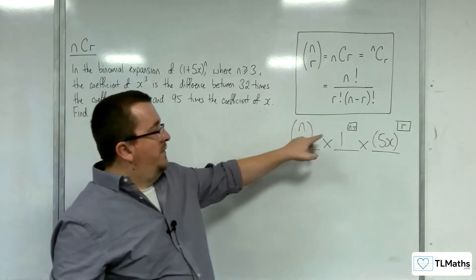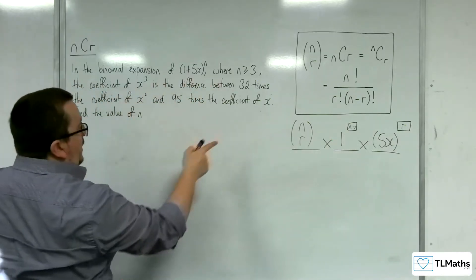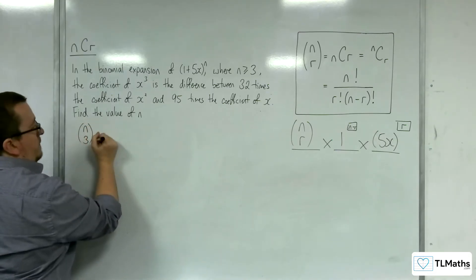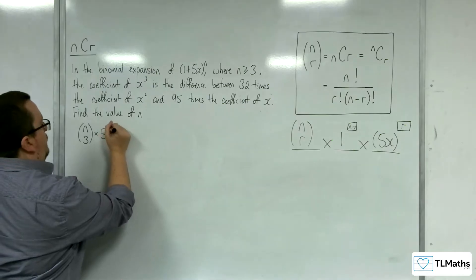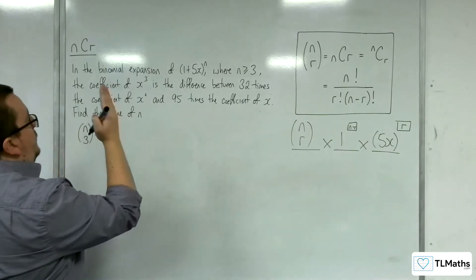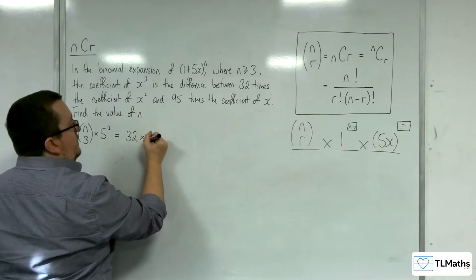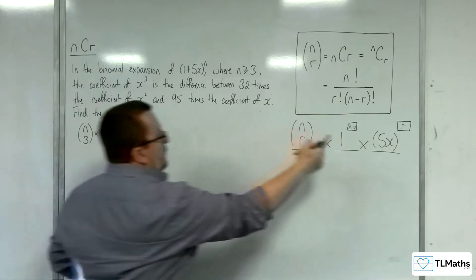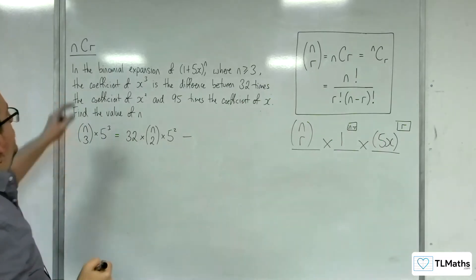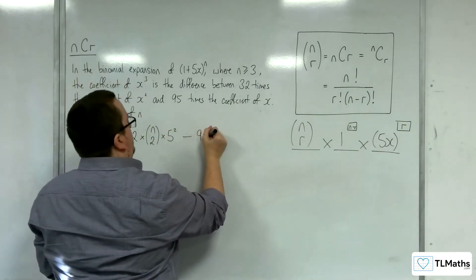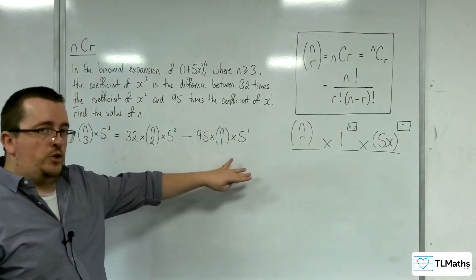So not only do we have the n choose r, that's just going to be 1, but we've got the 5 to the r as well. So if we want the coefficient of x cubed, that will be n choose 3 times by 5 cubed, because r is 3. So that is the difference between 32 times the coefficient of x squared, which will be n choose 2 times by 5 squared, subtract 95 times the coefficient of x. So 95 times n choose 1 times 5 to the 1. So this is the equation, that's the setup.